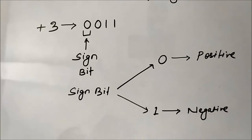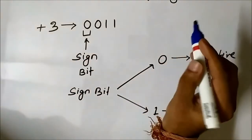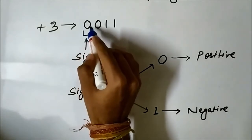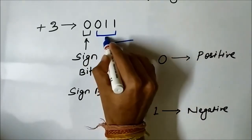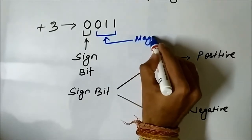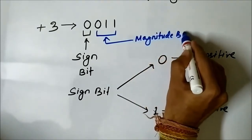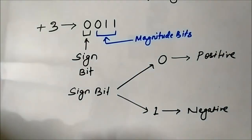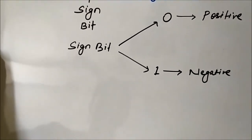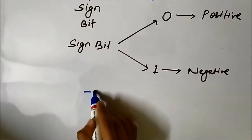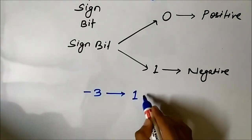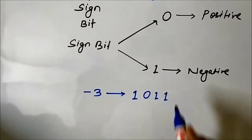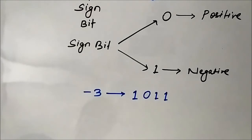So if we want to represent minus 3, the extreme left bit is the sign bit, and the remaining bits are the magnitude bits. The magnitude bits remain constant — only the sign bit changes. To represent minus 3, the sign bit changes to 1 while the magnitude bits remain as they are. So minus 3 in sign magnitude form is 1011.